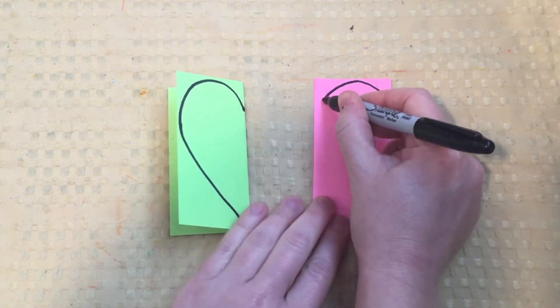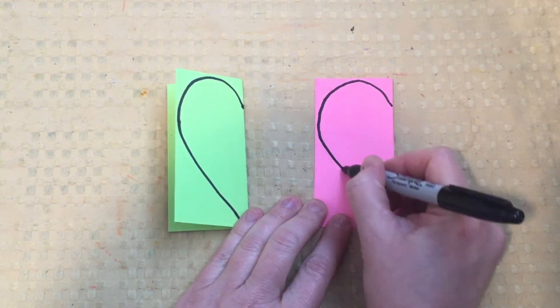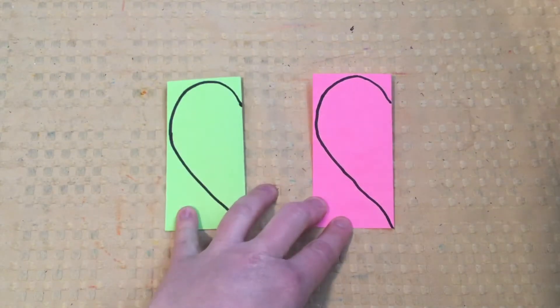And I'm going to make that curved candy cane, the half of the heart, starting at the folded side.